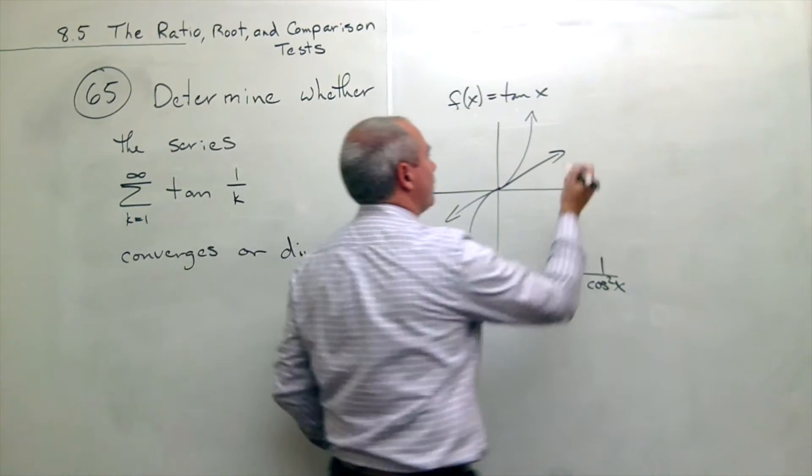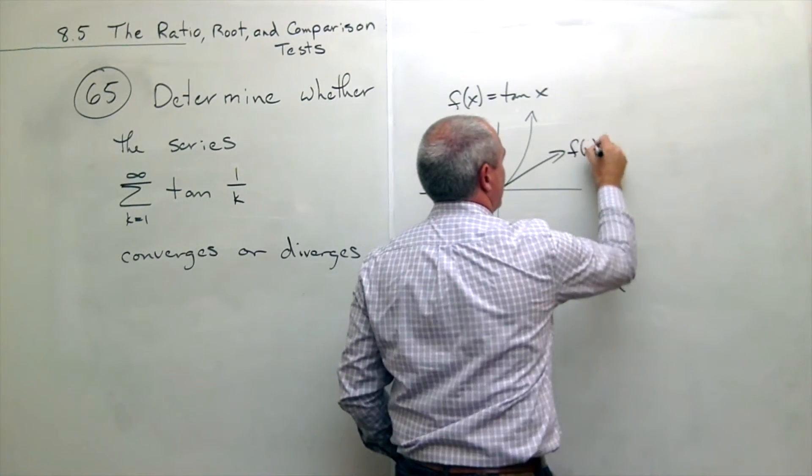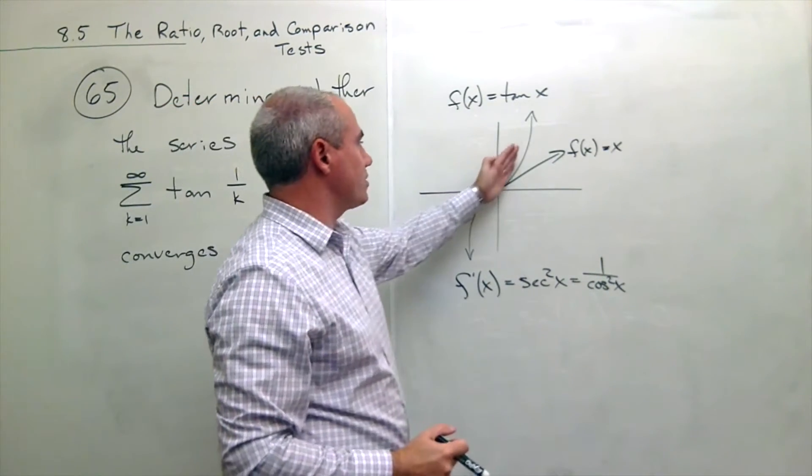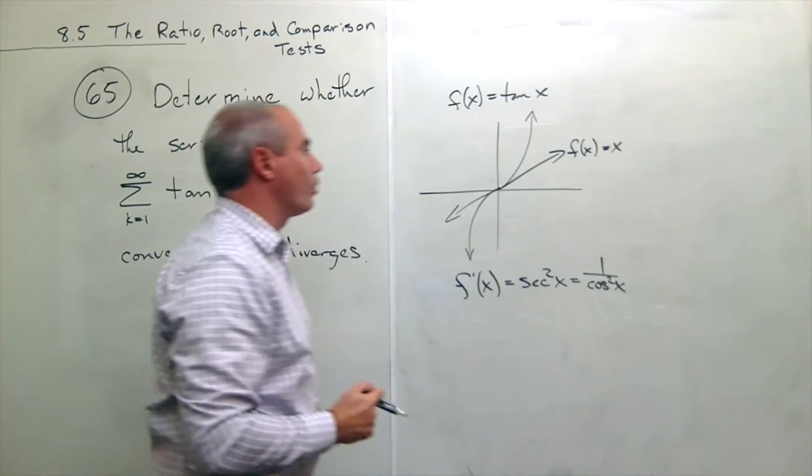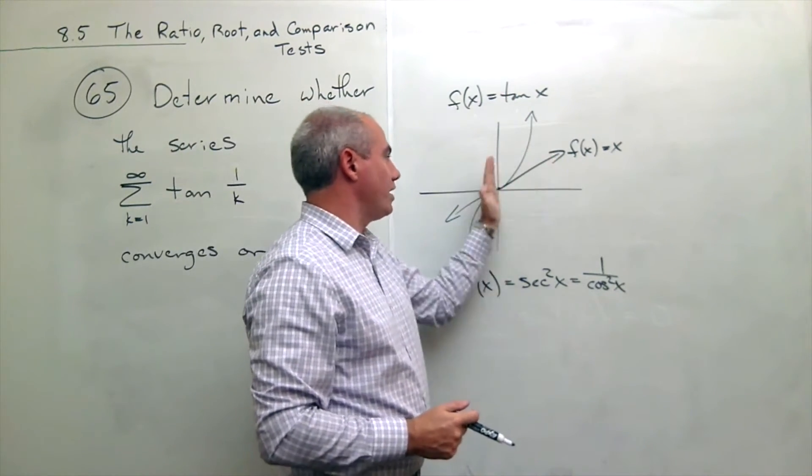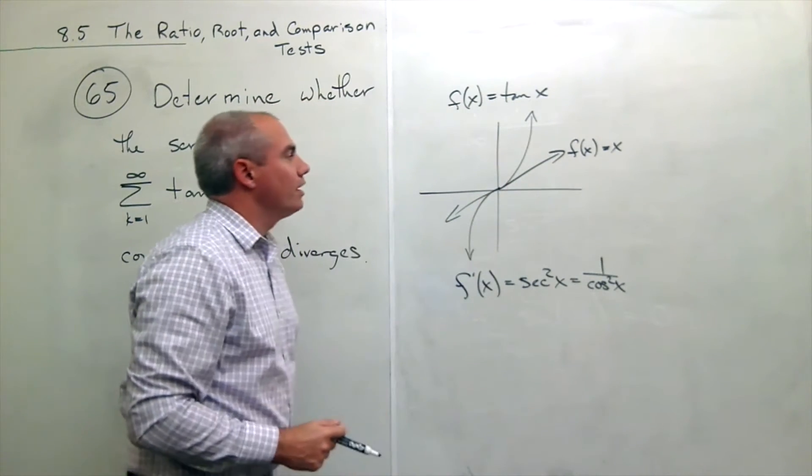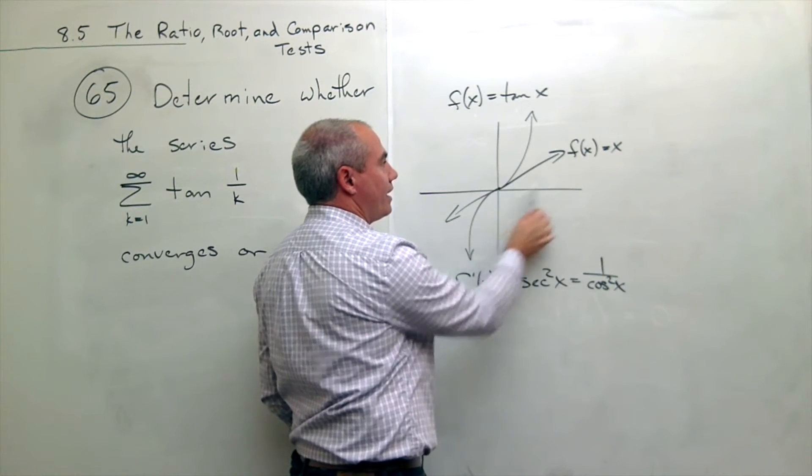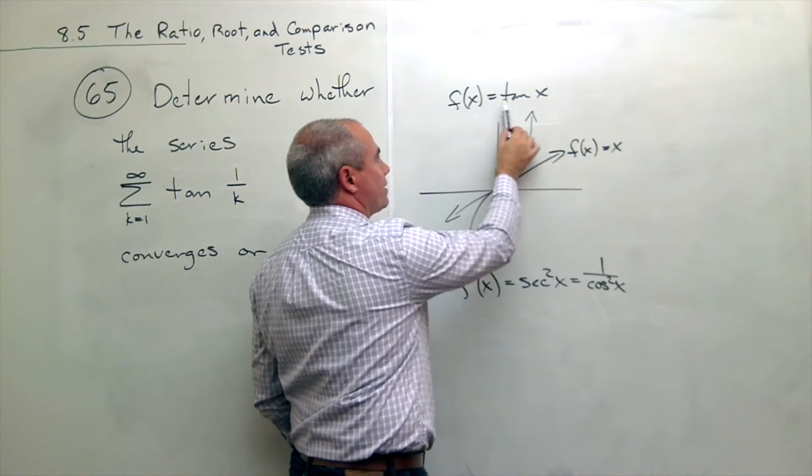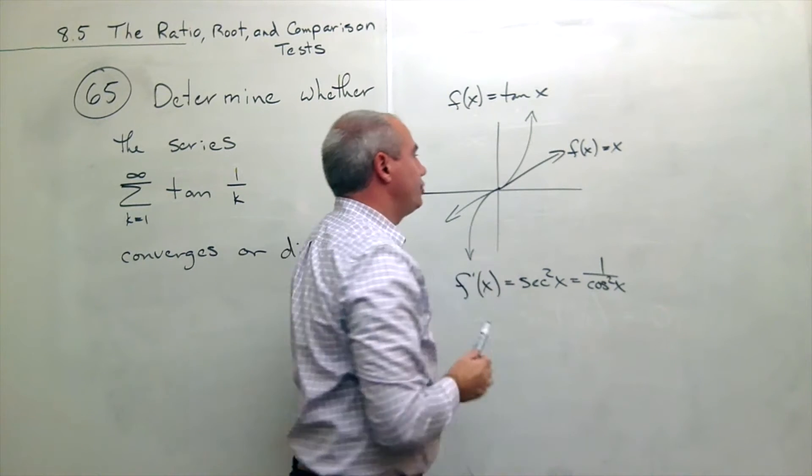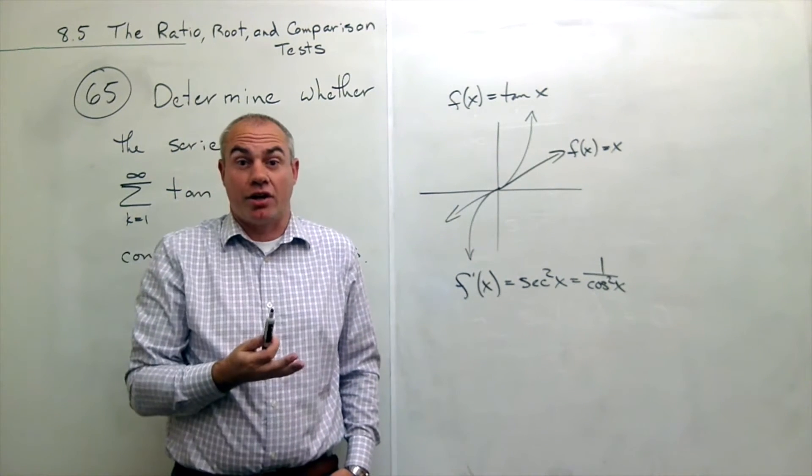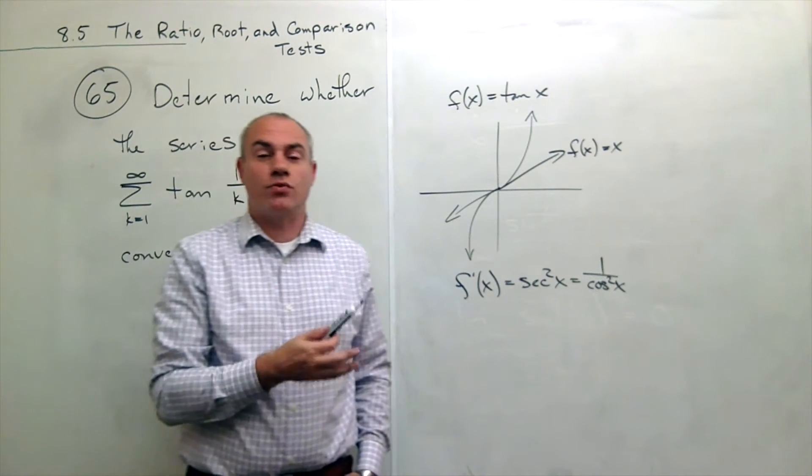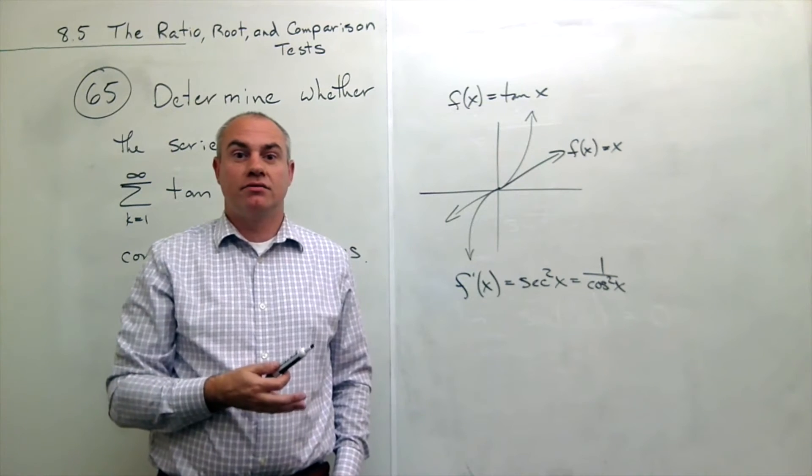So this is just the line f of x equals x. So what do I see here? This thing's always concave up, so it's kind of bending upward once we are right of the origin. And so if I plug in an x value and I look at f of x equals x and f of x equals tan x, tangent is always slightly bigger than x. So x and tan x, which is bigger? tan x is bigger.